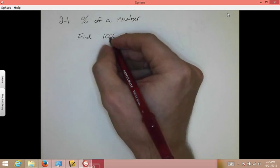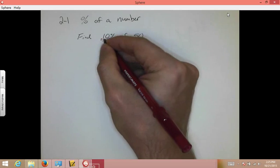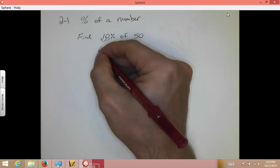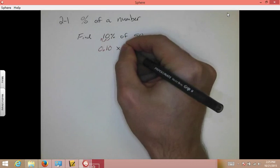The way we do that is by doing the Beyonce to the left to the left. Let's move that over twice to the left. You're going to rewrite that as 0.10. Then you simply multiply by the other number.